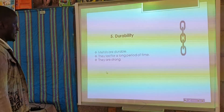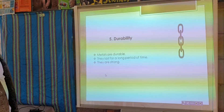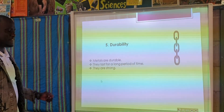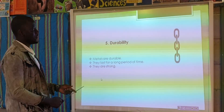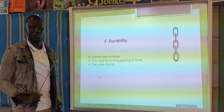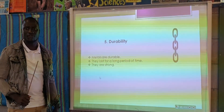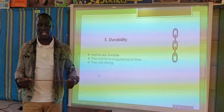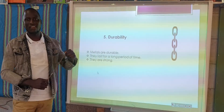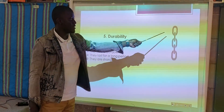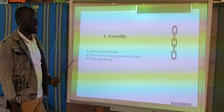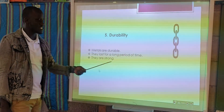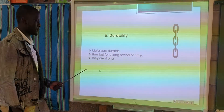Durability — metals are durable. They last for a long period of time and they are strong. Think about this chain. What do we use chains for? Most of the time, for heavy objects. For example, if we want to tow a car or lift up a heavy object, we use materials like chains because they are very, very strong. Durability means that they can last for a long period of time.